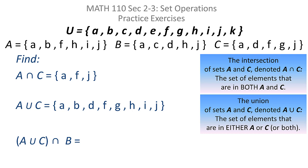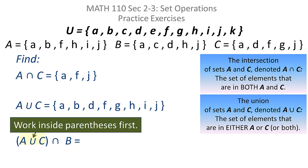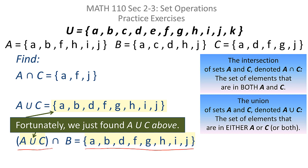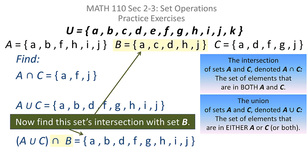Now let's find a more complicated set operation. I want to take the union of A and C, and then when I get that result, I want to take the intersection of that with the set B. The parentheses guide your order of operations here — I want to work inside the parentheses first and find A union C. Lucky for us, we just found that in the previous part of this problem, so all I need to do is pop that in. I take the set that was the union of those two sets and intersect it with the set B.